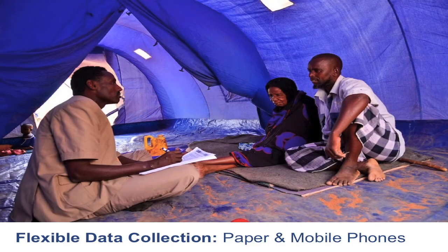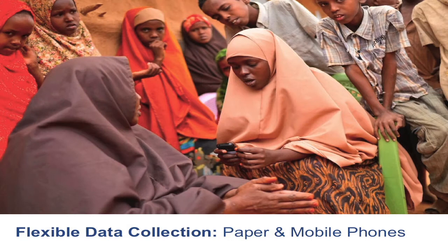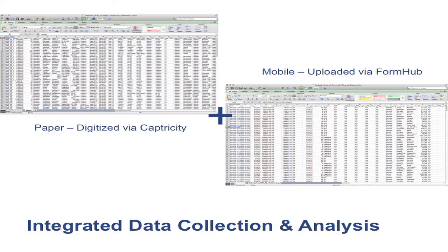The HDT is the first system that enables data collection by both paper and mobile phones, which offers enumerators tremendous flexibility in deciding which method to use, depending on the context, on the security situation, and who they may be interviewing next. Should a team decide to use both systems, the HDT allows you to scan in paper surveys and take that digitized data and combine it with the data collected through mobile phones and integrate it into one data set.